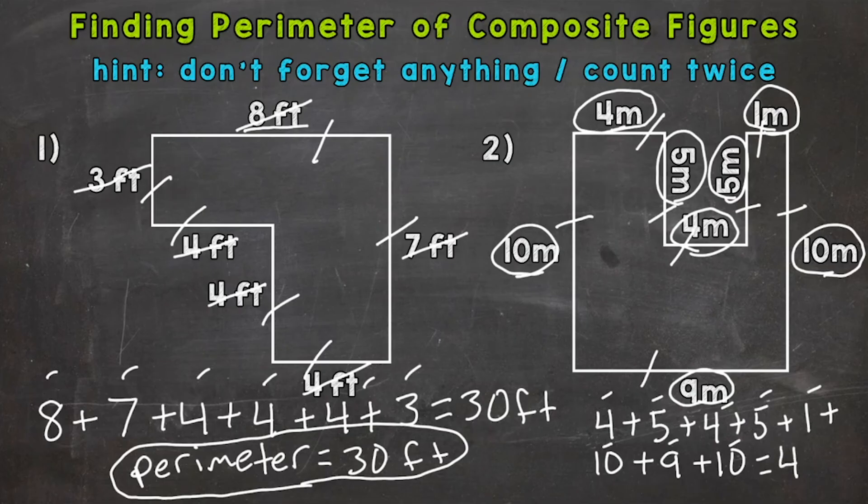So our perimeter is 48 meters. Let's write our final answer. Perimeter equals 48 meters.